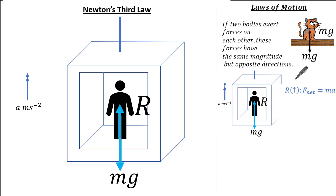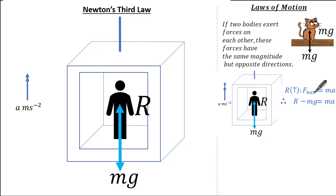Taking up as the positive direction and resolving the problem where the elevator is accelerating upwards: R minus the downward force (weight) gives us the net force, mass times acceleration. Therefore, to find the normal reaction when accelerating upwards, it is made up of the mass times the acceleration plus the weight.